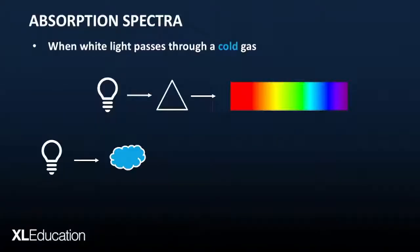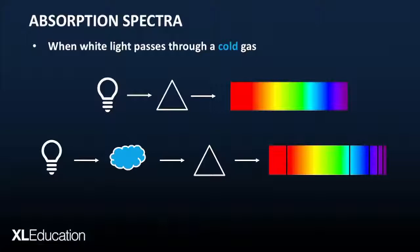So if we pass white light through cold hydrogen and then pass this light through a prism, we will see the following, which is the continuous spectrum with a few colors missing. And these colors are due to the photons that were absorbed by the cold hydrogen.